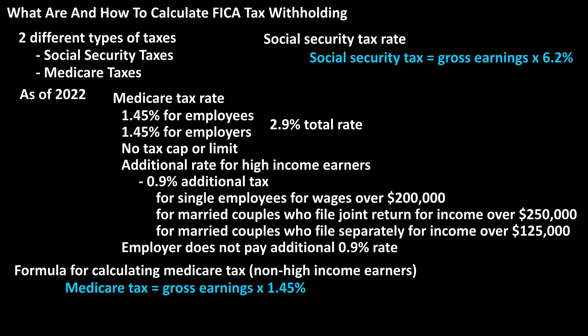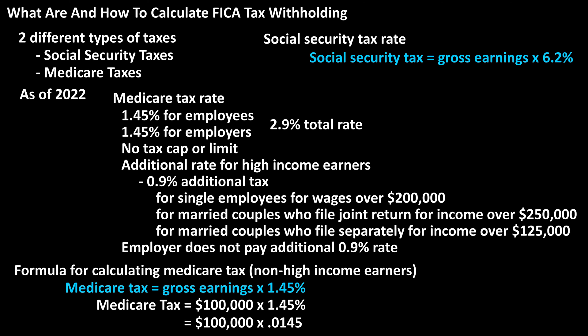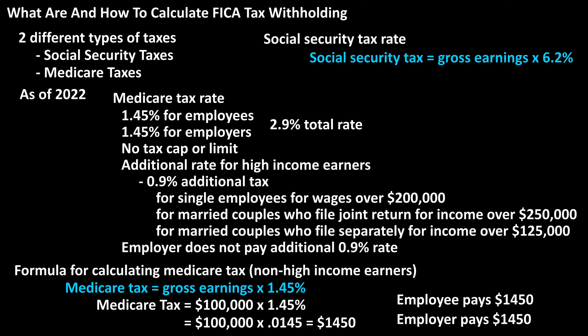The formula for calculating this tax is: Medicare tax equals gross earnings times 1.45%. As a quick example, if someone earns $100,000, their Medicare tax would be $100,000 times 1.45%, which must be changed to a decimal by dropping the percent sign and moving the decimal two places to the left to get 0.0145. So $100,000 times 0.0145, which equals $1,450. And the employer would also pay $1,450.